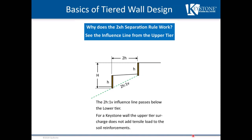Another consideration is the influence line from the upper tier. A 2 to 1 influence line is shown here starting at the bottom of the upper tier. A 2H separation ensures this conservative influence line passes below the lower tier, so the upper tier does not surcharge the lower tier.